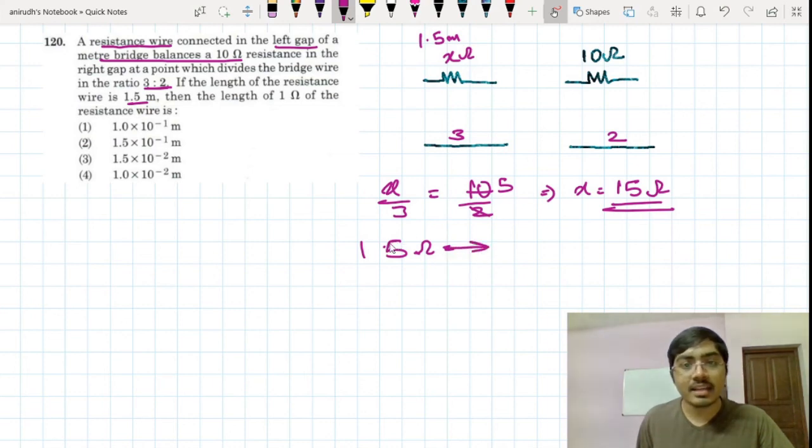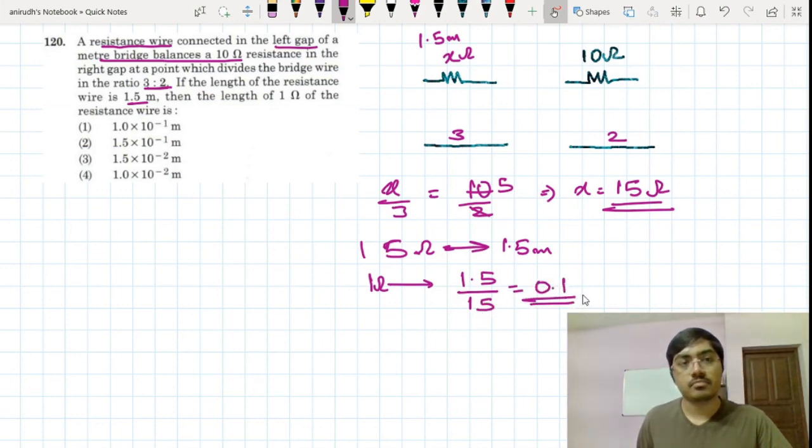So we got the net resistance of this. Now we know that 15 ohm is there in 1.5 meter. Now they are asking 1 ohm will be there in how much meter. So that is 1.5 divided by 15, so that is 0.1. So the answer is option number one.